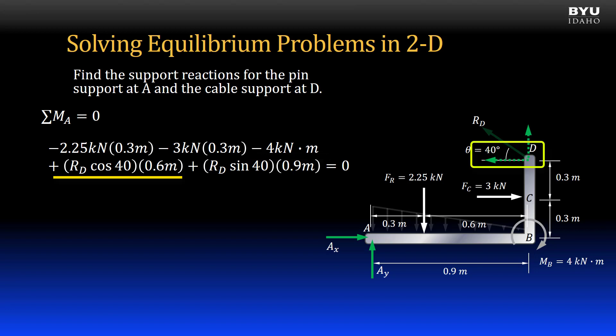Next, I include the horizontal component of RD times its moment arm, 0.6 meters. It is in the positive direction by the right-hand rule. And last, I include the vertical component of RD times its moment arm, 0.9 meters. It is also positive.